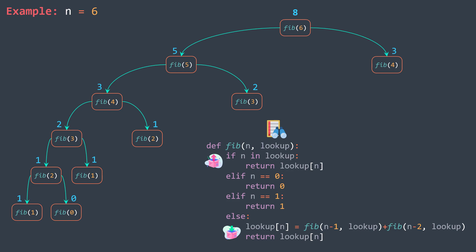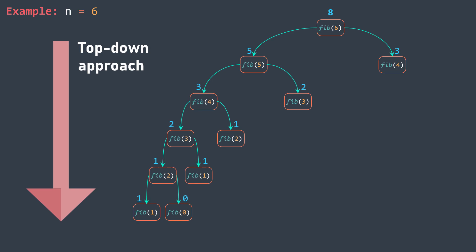In this approach, we start by trying to calculate fib(n); for that we calculate fib(n-1) and fib(n-2), and so on until the base cases. This is why it's called the top-down approach.